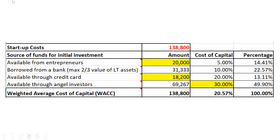Concept two: debt financing. In our case, we need to come up with $138,800. When the two partners assessed how much they could contribute through self-financing, it was $10,000 each — $20,000 total — and that wasn't enough. So the next place to turn is debt financing: the bank and the credit card.